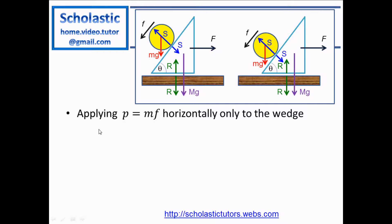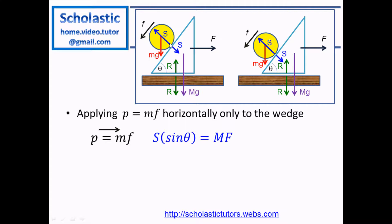Now we need to find the forces S and R. We apply P equals MF horizontally only to the wedge. The force S from the particle on the wedge has a horizontal component S sin theta, where theta is the inclination angle. Therefore: S sin theta equals capital M times capital F.